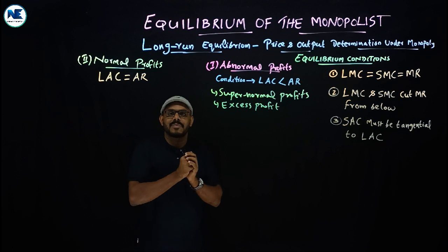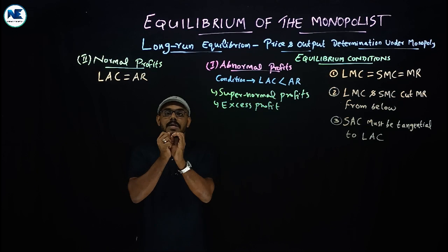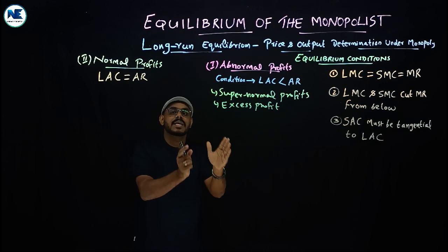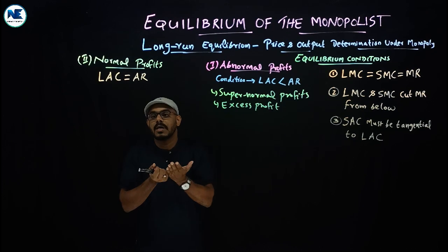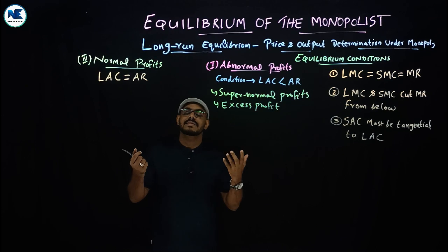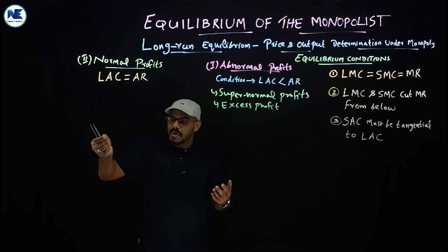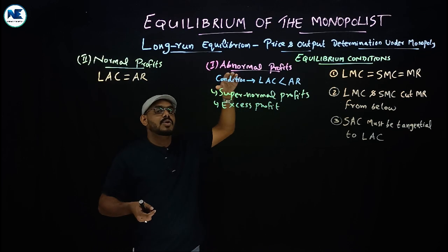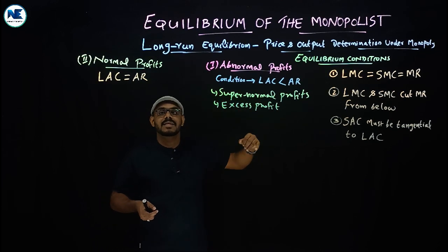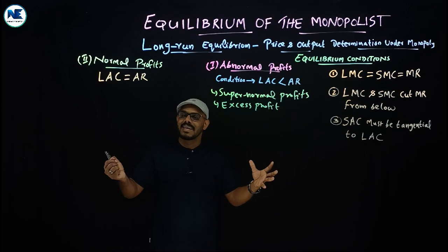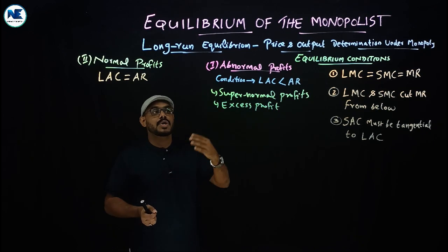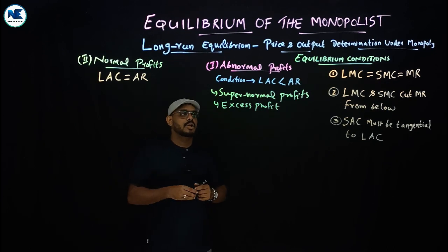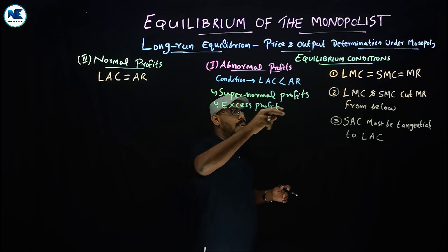In the long run, all factors of production are variable — there is no distinction between fixed input and variable input. The firm can maximize profit by adjusting all variable factors. In the short run, the firm cannot change the fixed factors or plan size, but in the long run, the firm can change plant size as well.